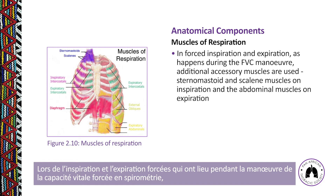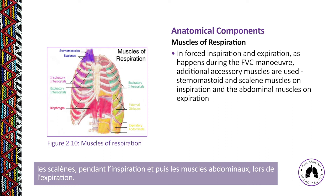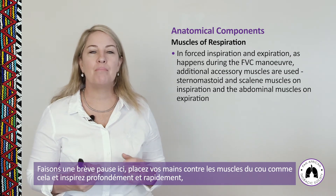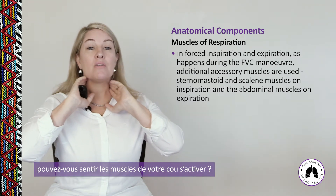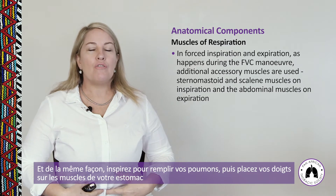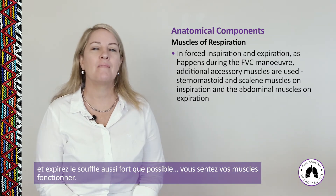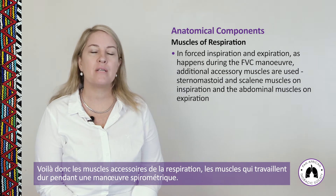In forced inspiration and expiration, as happens during the forced vital capacity maneuver in spirometry, additional accessory muscles are used: the sternomastoid and scalene muscles — the neck muscles — on inspiration, and the abdominal muscles on expiration. If you put your hands on your neck muscles and take a deep, fast breath in, you can feel these muscles working. And if you breathe in to fill your lungs, then put your fingers on your stomach muscles and blast the air out as fast as you can, you can feel your stomach muscles working — those are the accessory muscles used during a spirometry maneuver.